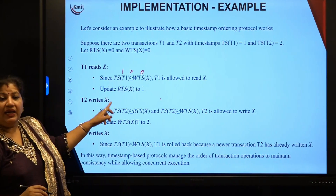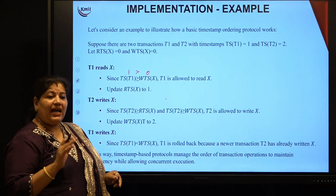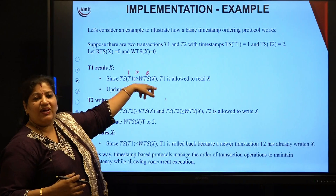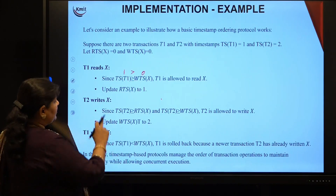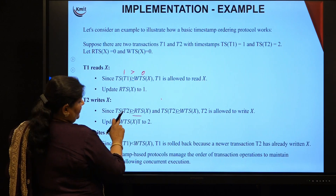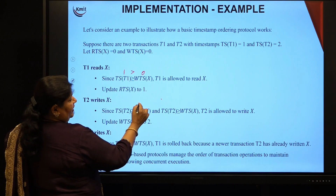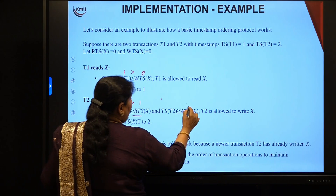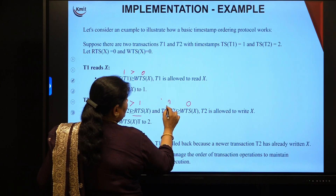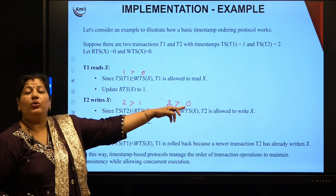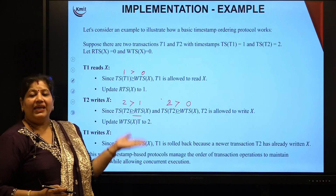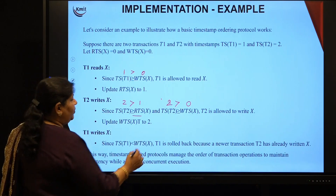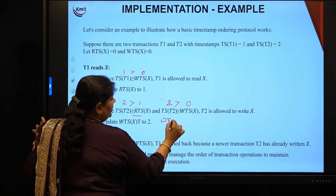Now T2 wants to write. Here also, you check that no later or younger transaction has already performed operations. In our case T1 and T2: T2 itself is the younger transaction. When it wants to write, you check: is TS(T2) greater than both RTS(x) and WTS(x)? TS(T2) is 2, RTS(x) is 1, WTS(x) is 0. T2 is greater, so T2 is allowed to write. The write timestamp WTS(x) will then be updated to TS(T2), so WTS(x) becomes 2.